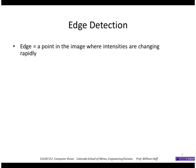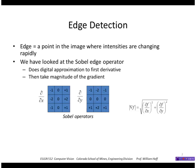So what is an edge? An edge is a point in the image where intensities are changing rapidly. We've looked at the Sobel edge operator, which does a digital approximation to the first derivative. This mask does a derivative in the x direction, and this mask does a derivative in the y direction. We can take the magnitude of the gradient by the square root of the sum of the squares — that's a way to detect places in the image where intensities are changing rapidly.